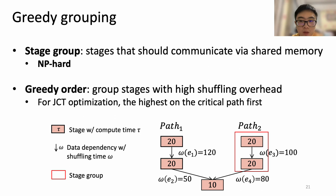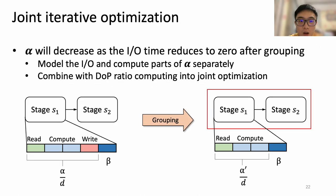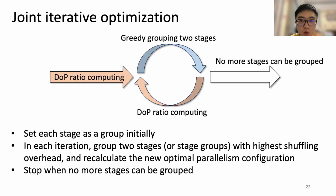For the joint optimization problem, we use stage groups to decouple function placement from parallelism configuration. Stages within a group are placed on the same server to eliminate data shuffling overhead. Since the grouping problem is NP-hard, we apply a greedy order that groups stages with high shuffling overhead first. For grouped stages, their parallelized time parameter alpha decreases and changes the optimal parallelism configuration. We model the IO and compute parts of alpha separately, and combine greedy grouping with DOP ratio computing into a joint iterative optimization method. Initially each stage is its own group; in each iteration we group stages with the highest shuffling overhead and recalculate optimal parallelism, repeating until no more stages can be grouped.